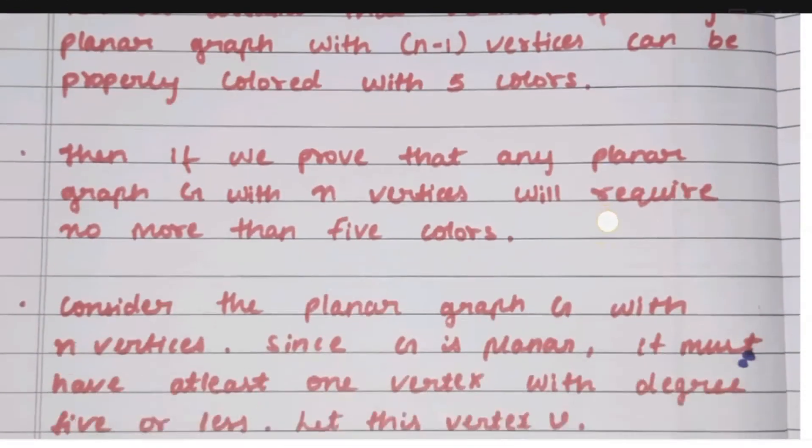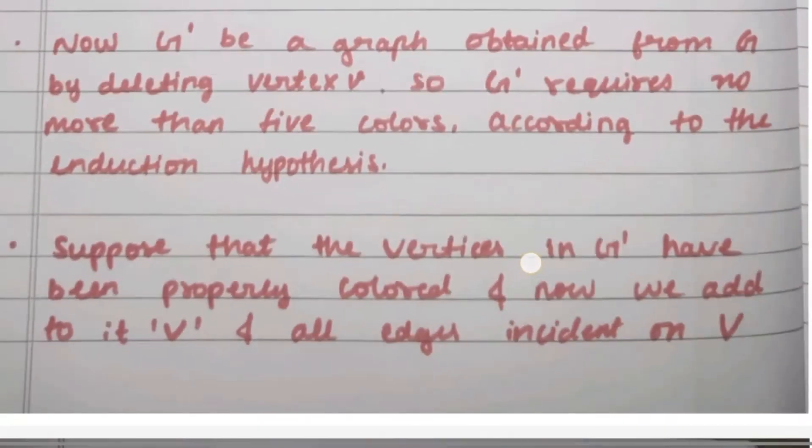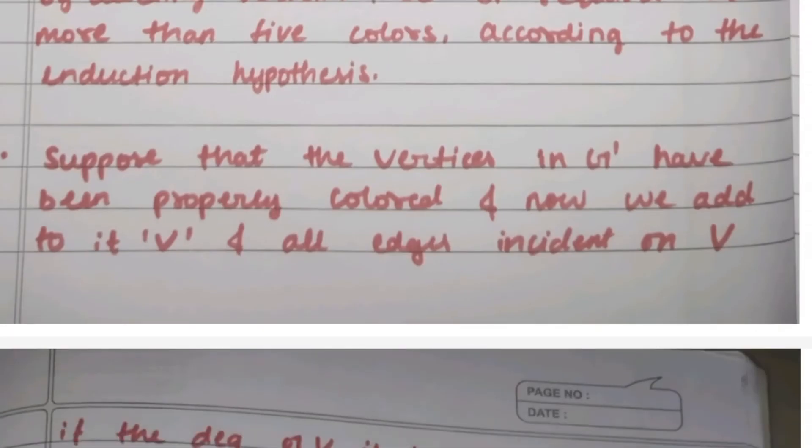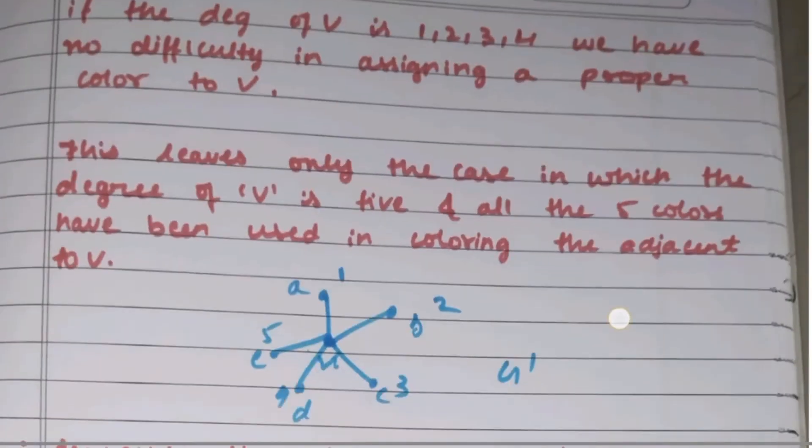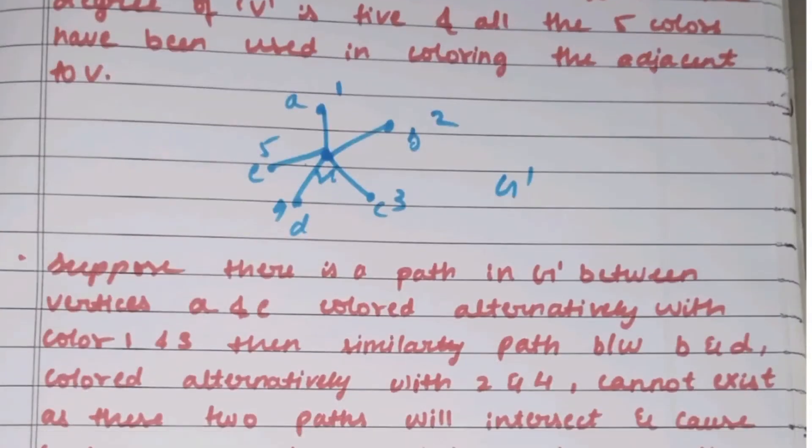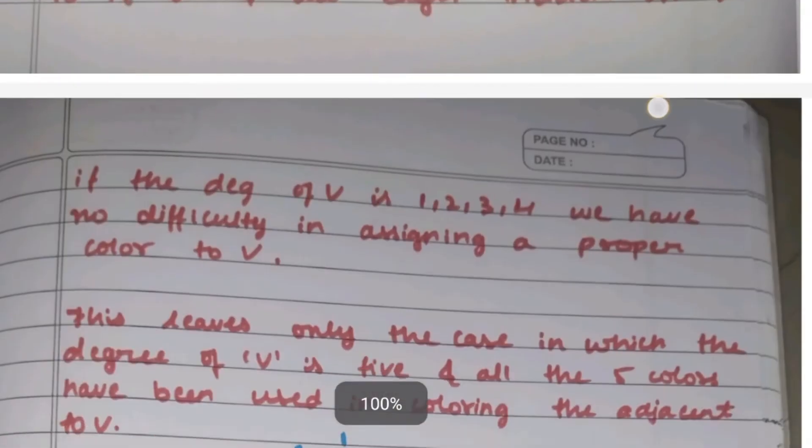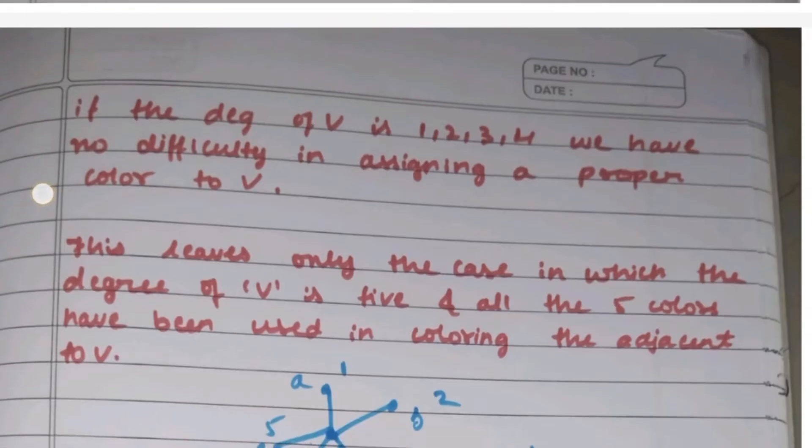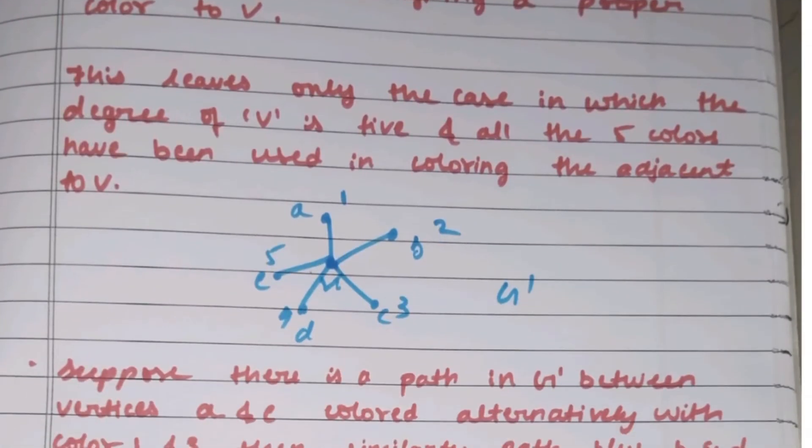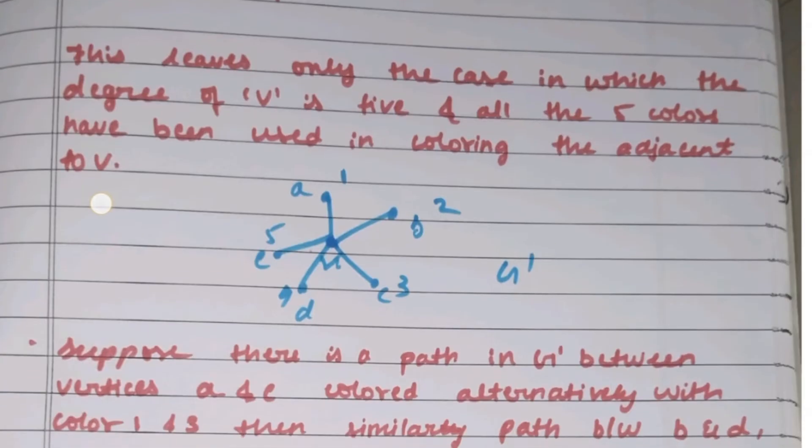Suppose the vertices in G' have been properly colored. Now we add vertex V and all edges incident on V. If the degree of V is 1, 2, 3, or 4, we have no difficulty assigning a proper color to V. This leaves only the case where the degree of V is 5, and all 5 colors have been used by adjacent vertices.